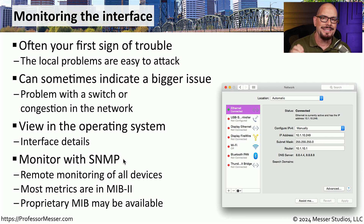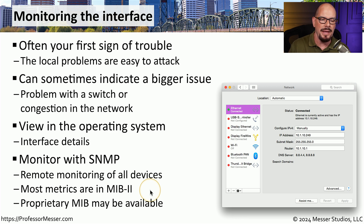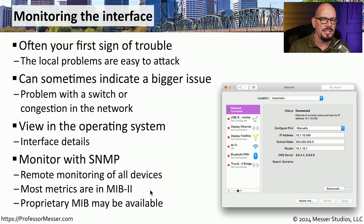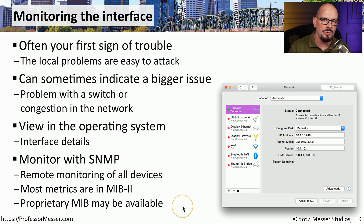Many devices will support a standard set of SNMP statistics known as a MIB2 — a management information base. MIB2 provides us with a set of standard statistics that are common across many different devices. But you may find that your firewall or your switch might have some statistics that are unique to that particular device, and there may be a proprietary MIB that you can integrate into that process to get even more visibility into that interface.